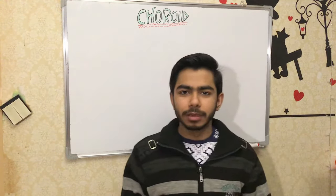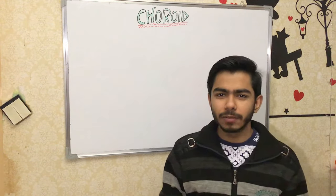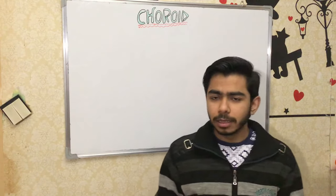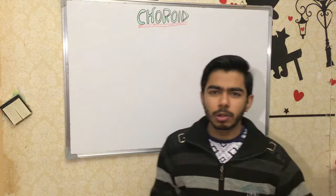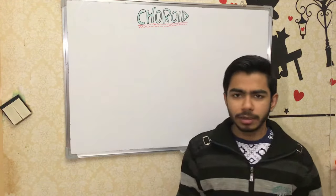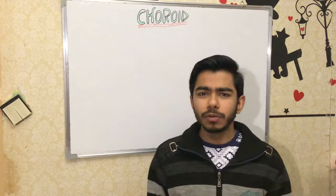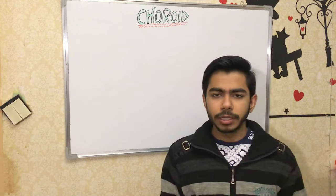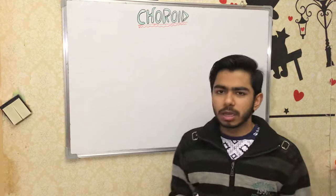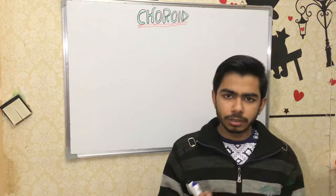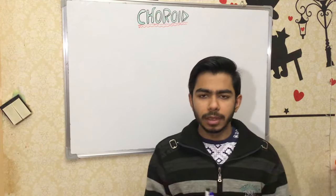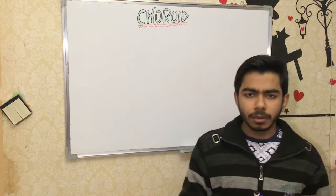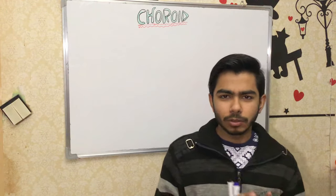Hey guys, this is Shubham. In previous videos in ophthalmology I have already discussed about the cornea and the sclera, which are the outermost parts of our eyeball. In this video I am talking about the uveal tract, and mainly I will talk about the choroid layer. Basically, the uveal tract consists of three components: the choroid, ciliary body, and the iris.